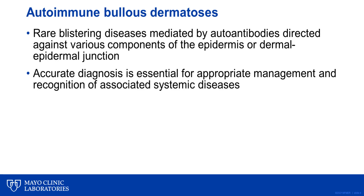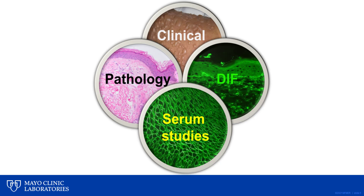In either case, autoantibodies can lead to loss of adhesion and cause erosions or ulcerations clinically. Accurate diagnosis is essential to assure appropriate therapeutic decisions, as well as to recognize systemic diseases associated with the autoimmune bullous dermatoses. The diagnosis of autoimmune blistering diseases requires careful correlation of clinical features with histopathologic findings, direct immunofluorescence features, and results of serum studies.